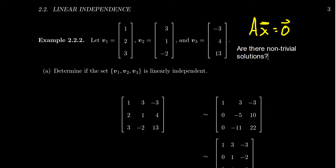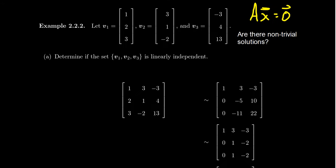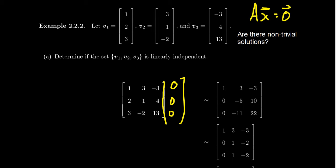To work with that, we set up an augmented matrix where the coefficient matrix is just matrix A — its first column is v1, its second is v2, its third is v3. To be proper, we should augment this with the zero vector (0, 0, 0). You'll notice I originally omitted that, and we'll see in a moment why.